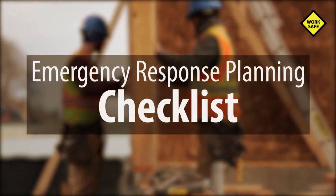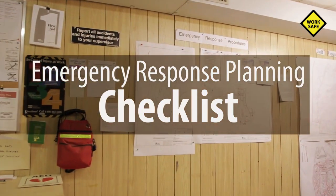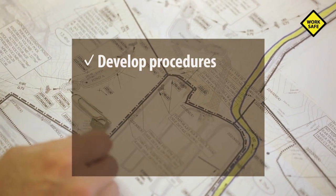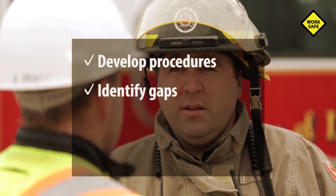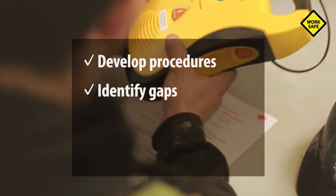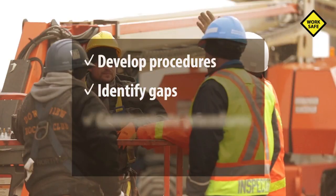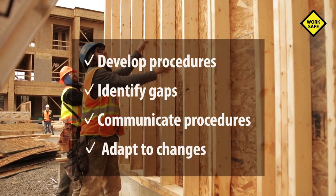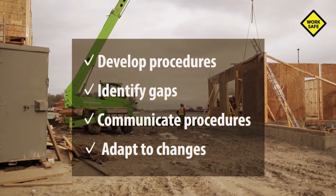The emergency response planning checklist should be used to develop project-specific emergency response and rescue procedures, identify the scope and limitations of external rescue support, and develop contingencies if there are gaps. Communicate procedures, and evaluate and adapt procedures to meet changing project activities.